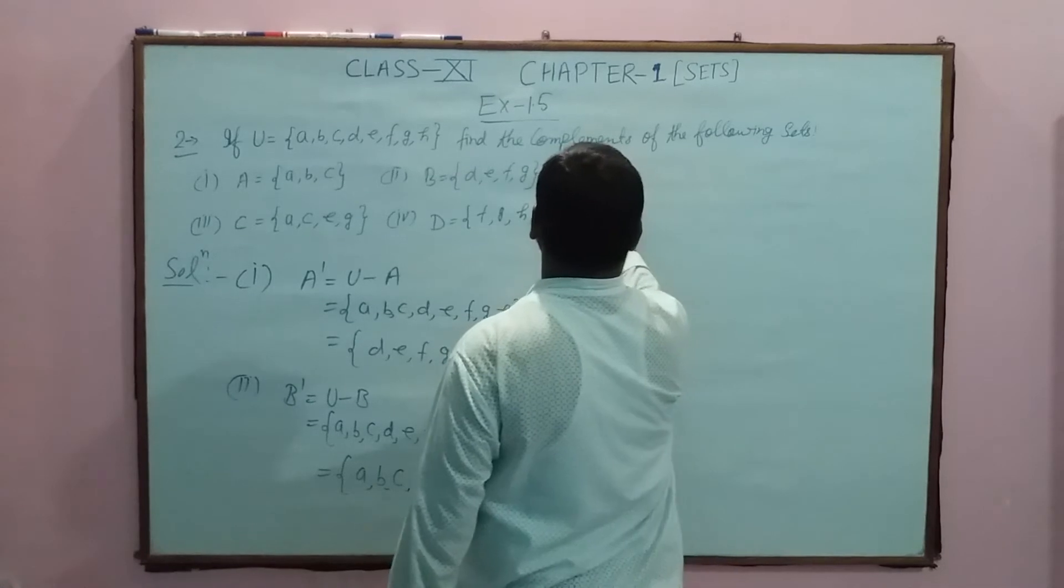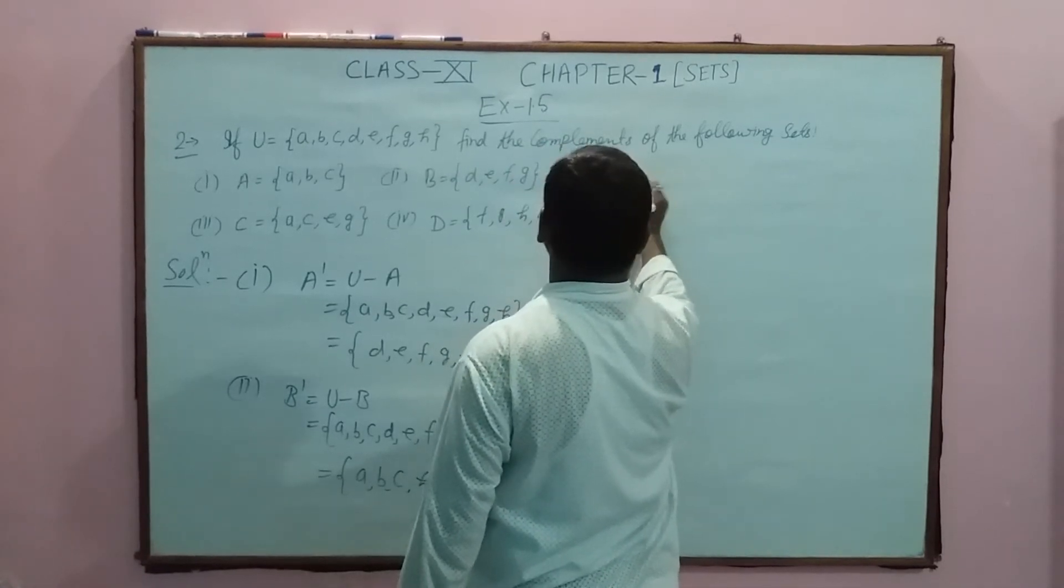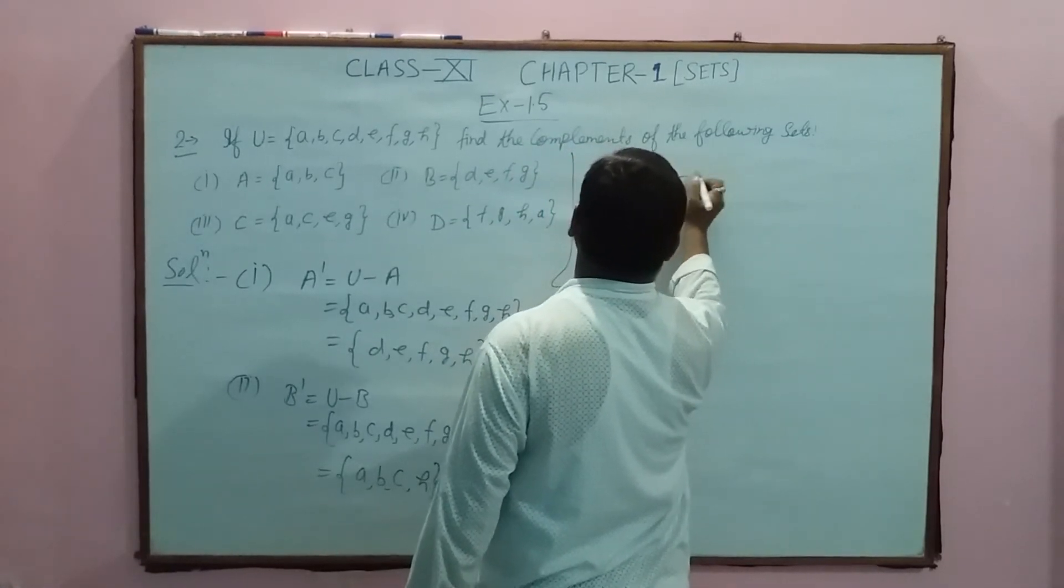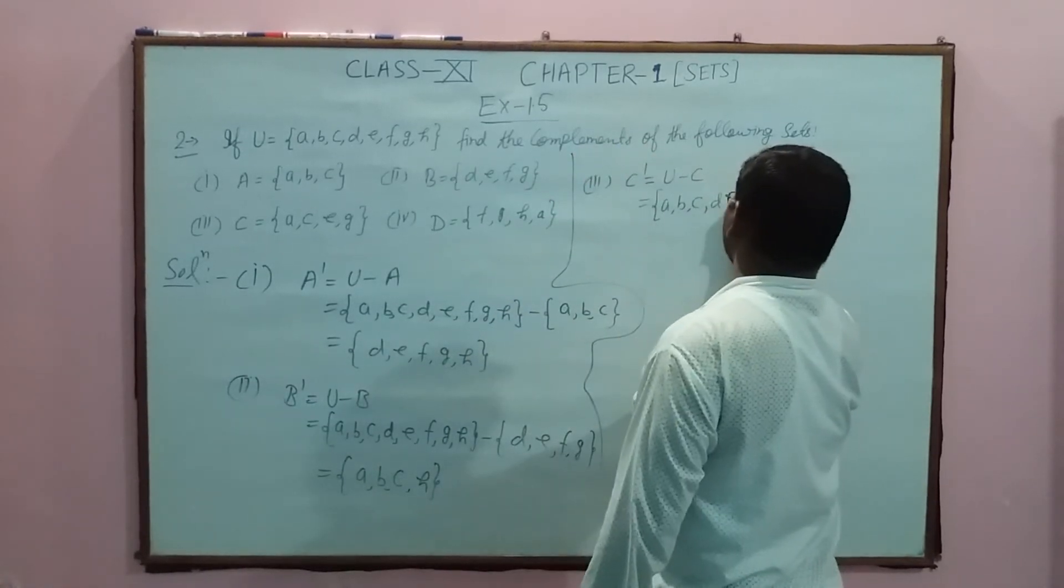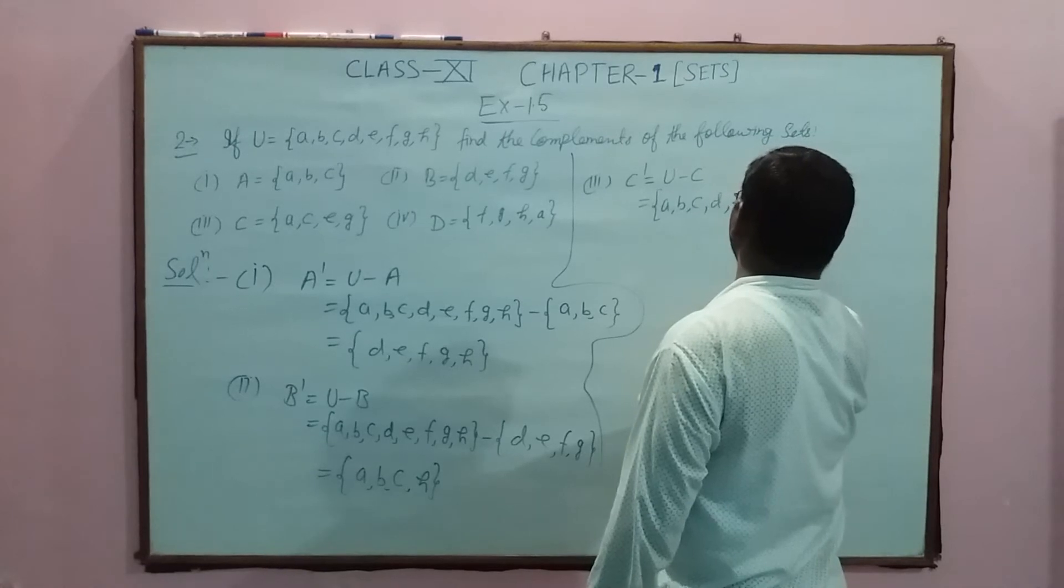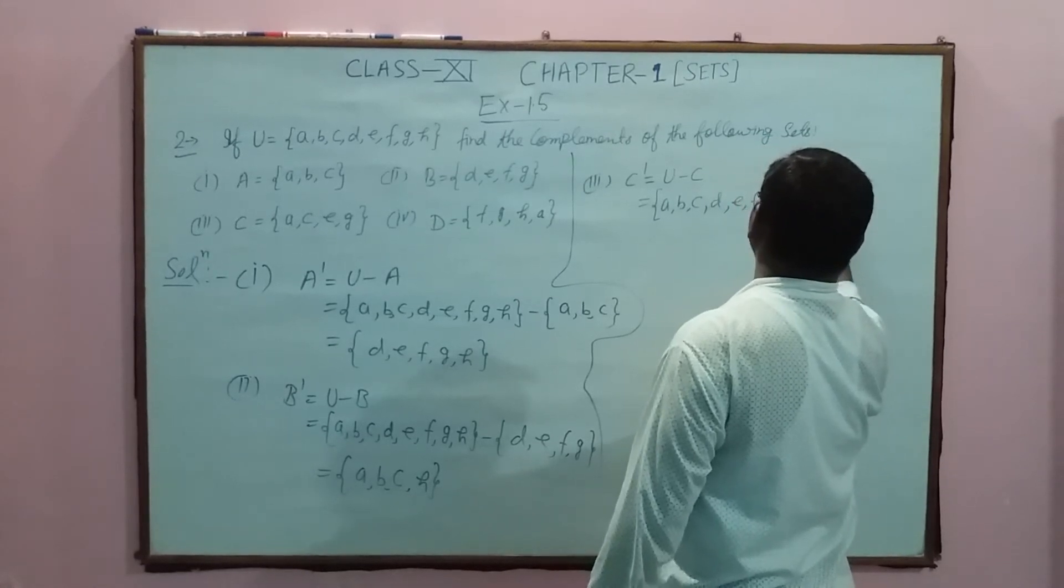Third part: C complement equals U minus C. U is {a, b, c, d, e, f, g, h} minus C.